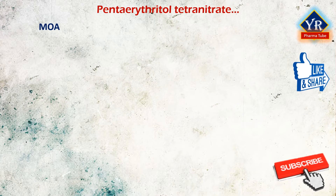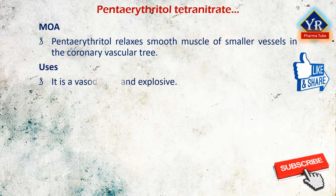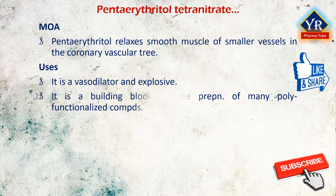The mechanism of action of penta erythritol tetranitrate is similar to glyceryl trinitrate, but its duration of action is more prolonged. It relaxes the smooth muscle of smaller vessels in the coronary vascular tree. Penta erythritol is a vasodilator and explosive.